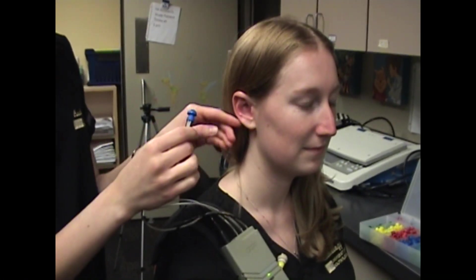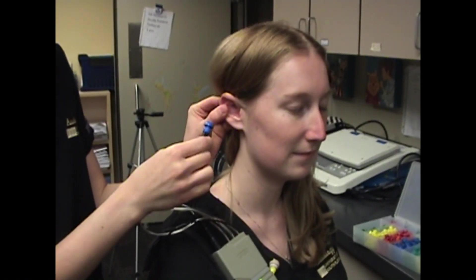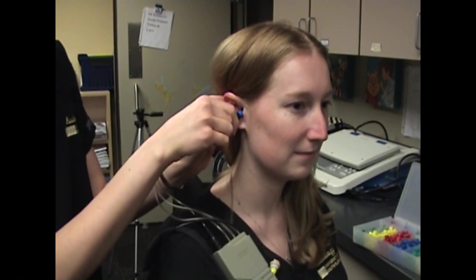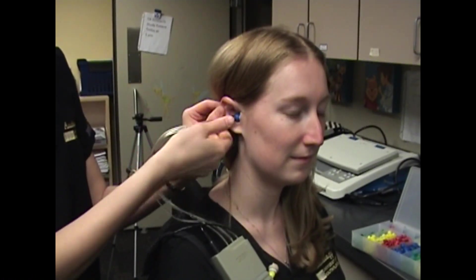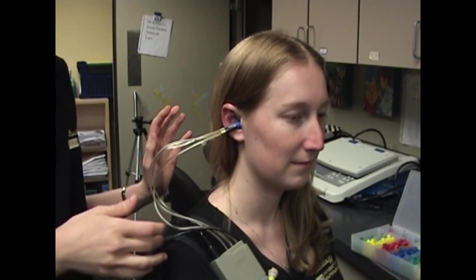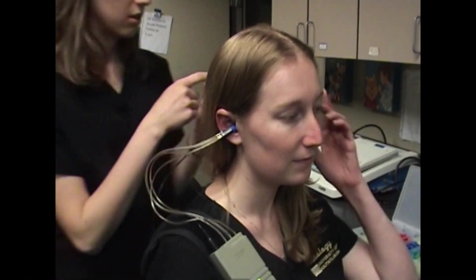Now we'll go over inserting the tip for the tympanometry probe. For this, we want to make sure we're achieving a hermetic seal. Pull back on the pinna, insert the tip—don't be afraid to push it in a little bit—give it a nice twist, and then let go of the pinna so you create a nice seal.